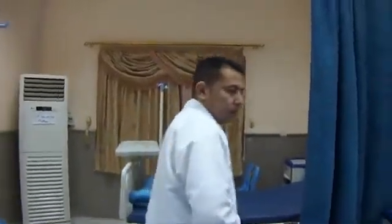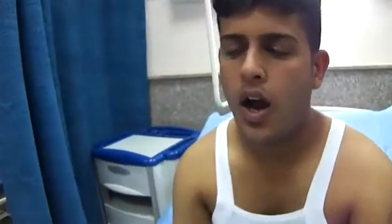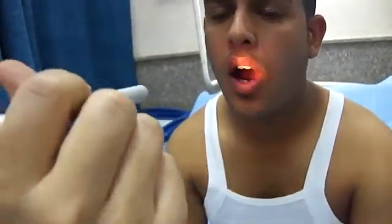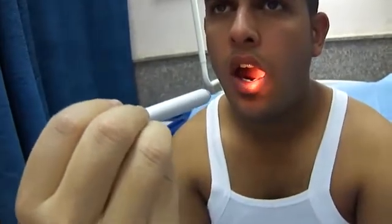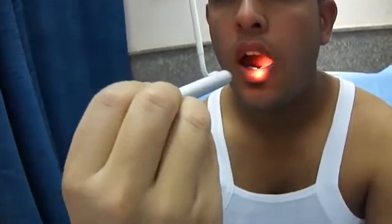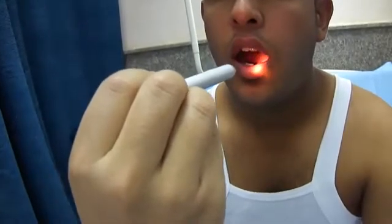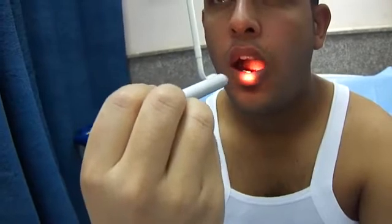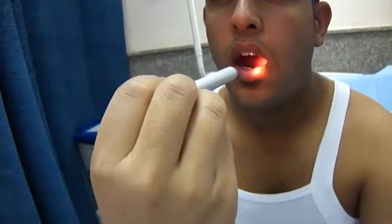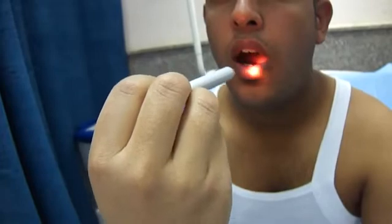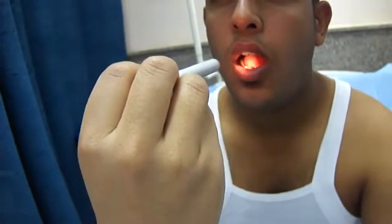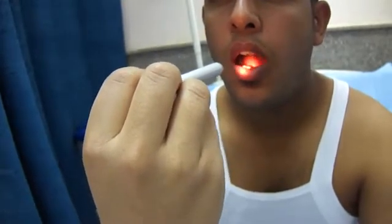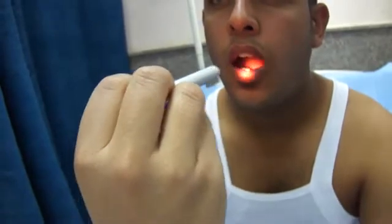First of all, I'll ask the patient to open his mouth and look at the tongue on both sides to see whether there is any fasciculation or wasting. As previously noted, similar to the 7th and 10th cranial nerves with respect to deviation, with the 5th and 12th cranial nerves the tongue will deviate toward the affected side.